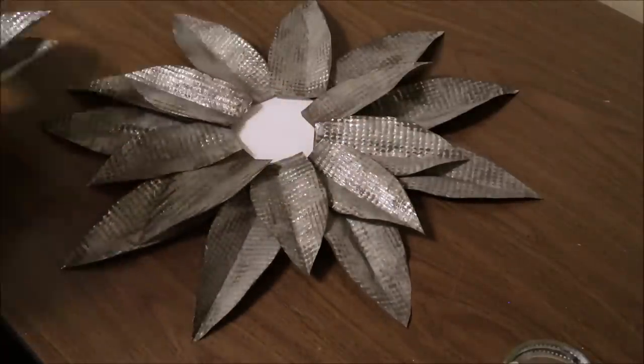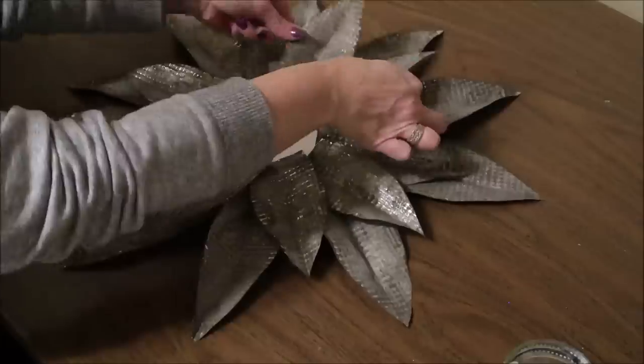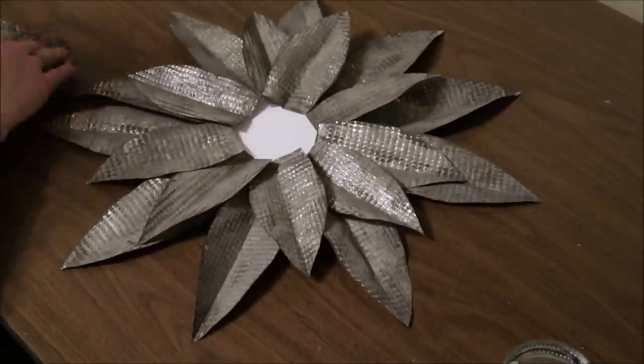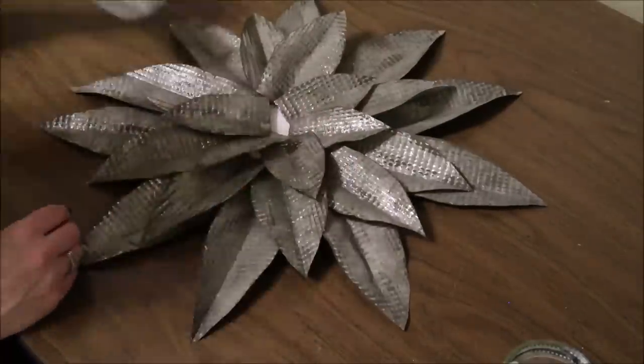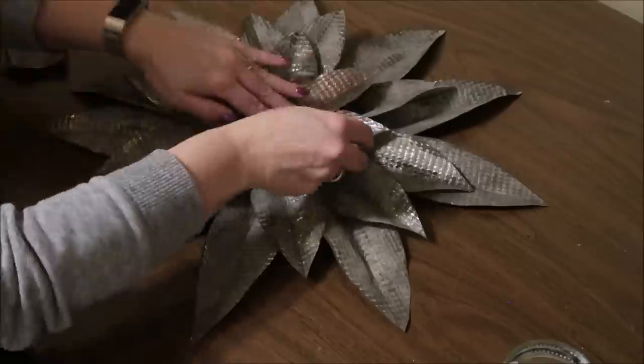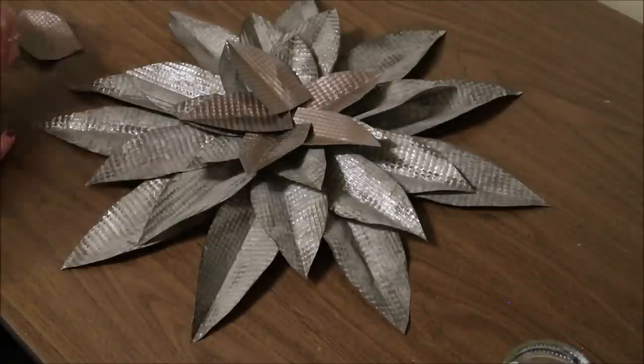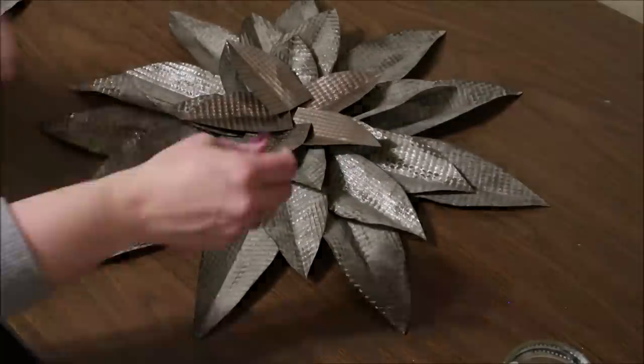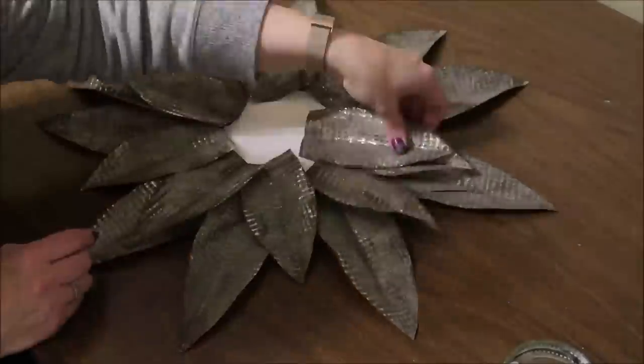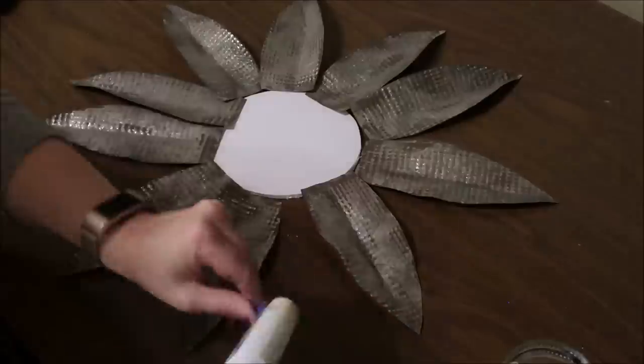Before I start gluing, I lay all of my petals around just so I can get an idea of how they're going to fit and if I have enough petals or how I want to space them. Then I will remove the top layers and just start gluing down the first layer of petals and just work in from there.